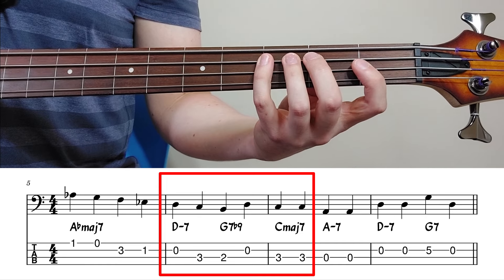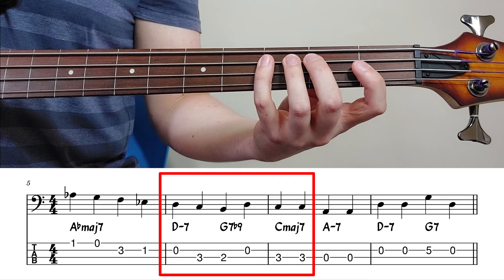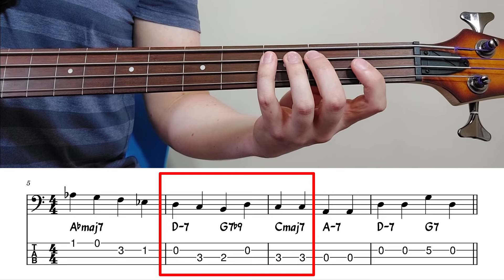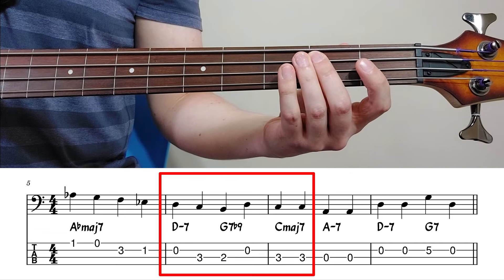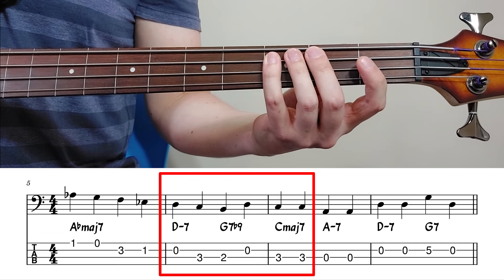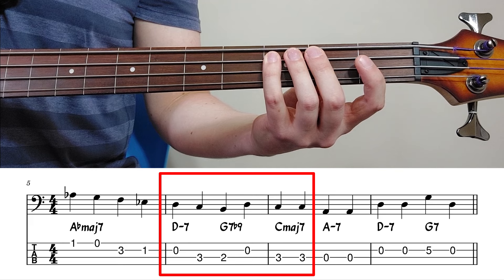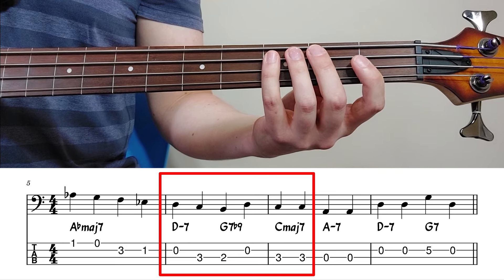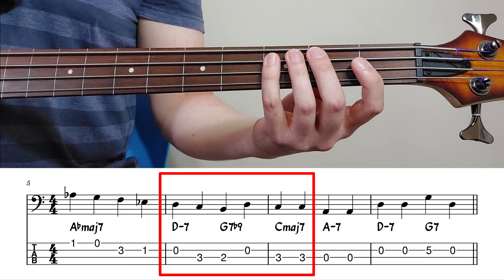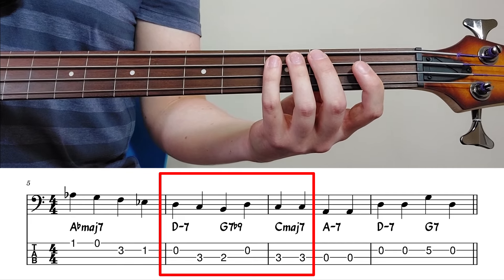In measure 6, we return to the starting key center of C through another 2-5-1. D minor 7, G7, flat 9, and then C major 7 again. These are all very quick 2-5-1s. Each chord only lasts for 2 beats, so we don't have a lot of time to outline the chord progression.